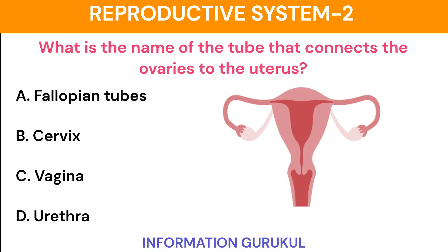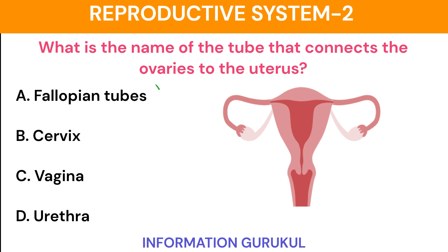What is the name of the tube that connects the ovaries to the uterus? Fallopian tube.